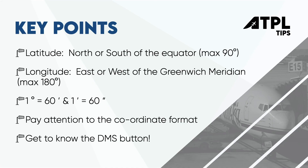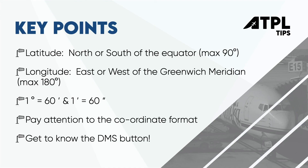There are a few key points to be aware of. Latitude measures the angle between the equator and your position, either north or south. Longitude deals with your position to the east or west of the Greenwich Meridian. One degree is made up of 60 minutes, and one minute is made up of 60 seconds. Pay close attention to the format of coordinates given in your exam questions. Get to know the DMS button on your calculator — it will become your friend, especially in GNAV. That's it for this quick refresher on latitude and longitude. Go watch the next video on departure, give this video a thumbs up if you found it helpful, subscribe to the channel, and I'll see you next time with some more ATPL tips.